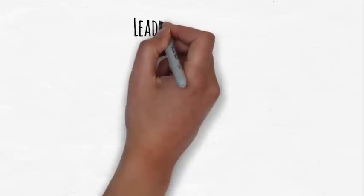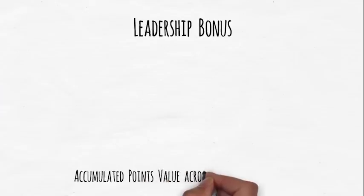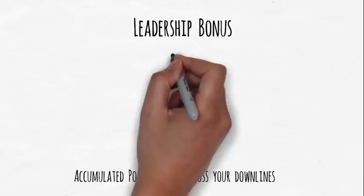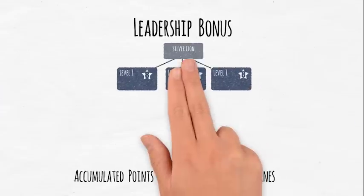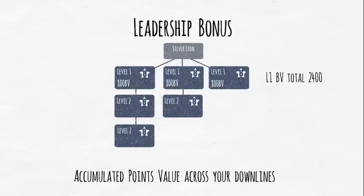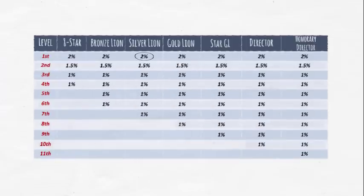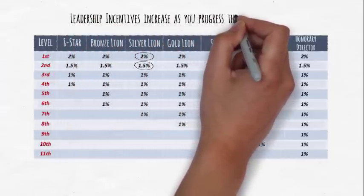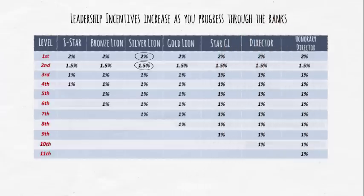The next incentive is the leadership bonus, which is the money paid to you based on the accumulated points value across your down lines. Again, it depends upon the rank you and your team have achieved and the total volume of stock you've sold. Let's see an example. In this example, you are a Silver Lion. You have 3 people on level 1 at 8 star rank. Their BV total is 3 times 800 equals 2,400. You also have 3 people at level 2 with an 8 star rank. Their BV total is 2,100. So your leadership bonus for the month would be 2% for level 1 and 1.5% for level 2. As you can see from this table, the leadership incentives increase as you progress through the ranks, giving you commission across more levels.